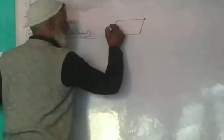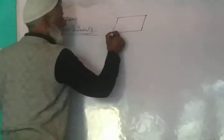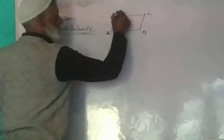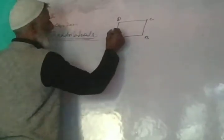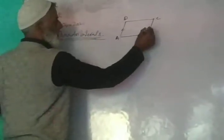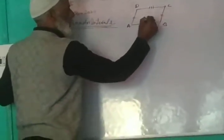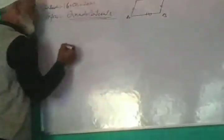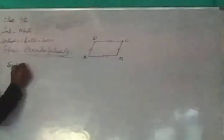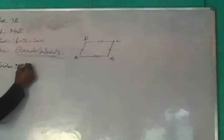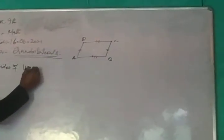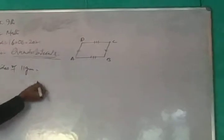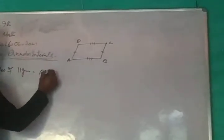Suppose ABCD is a parallelogram. We can refer to a side of the parallelogram. If you have a side of the parallelogram, the opposite side of the parallelogram is also a side of the parallelogram — which is the same as AB.